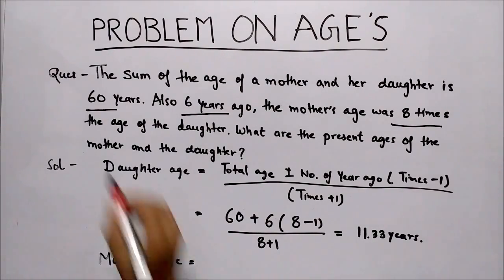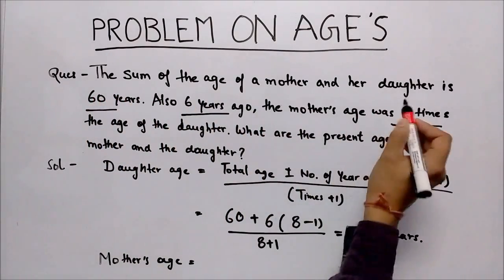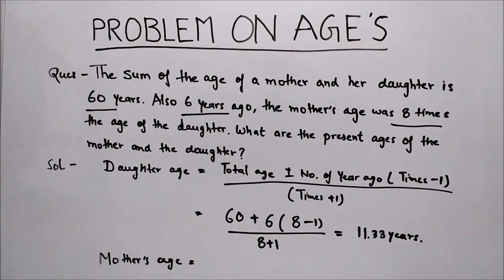As in the question, the sum of the age of mother and her daughter is 60. The total age of mother and daughter is 60, and we found daughter's age is 11.33, so mother's age will be 60 minus 11.33, that goes to 48.67 years.